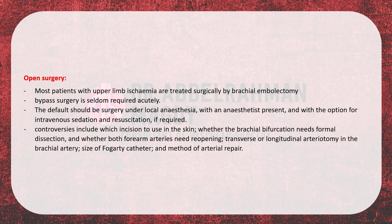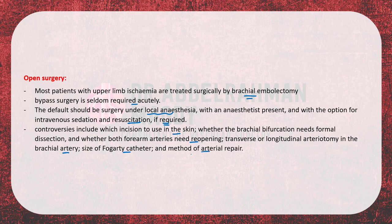Regarding open surgery: most patients with upper limb ischemia are treated surgically by brachial embolectomy; bypass surgery is seldom required acutely. The default should be surgery under local anesthesia, but with an anesthetist present in the room and the option for intravenous sedation and resuscitation if required. Controversies in surgical options include which skin incision to use, whether the brachial bifurcation needs formal dissection, whether both forearm arteries need reopening, whether to use a transverse or longitudinal arteriotomy, what size of Fogarty catheter to use, and the method of arterial repair.